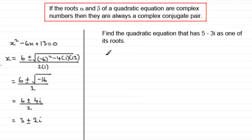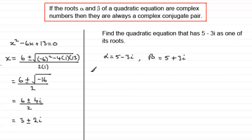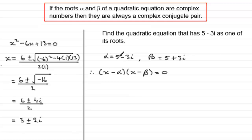Well if we know that one of the roots — let's say alpha — equals 5 minus 3i, then the other root, beta, must be the complex conjugate of this, which will be 5 plus 3i. Now if we know that these are the roots, they must have come from an equation looking like x minus alpha multiplied by x minus beta equals 0, because x minus alpha equals 0 or x minus beta equals 0 would lead to x equaling alpha or x equaling beta.